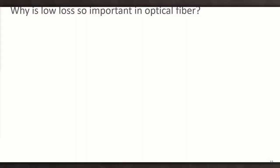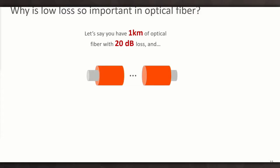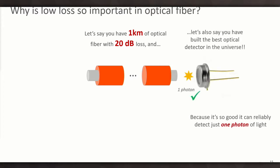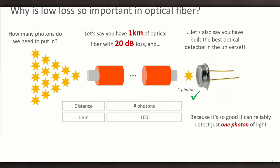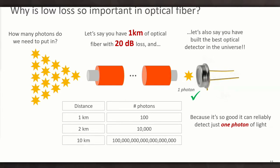So why is low loss so important? If you've got a kilometer of optical fiber with 20 dB loss, and you manage to make the best optical detector in the world, in other words, that it can reliably detect one single photon in the receiver, then how many photons do you need to put into this fiber? Well, at a distance of one kilometer, you'd need 100 photons in at the transmitter. But at two kilometers, you already need 10,000 photons. And at 10 kilometers, you need 10 to the power 20 photons.